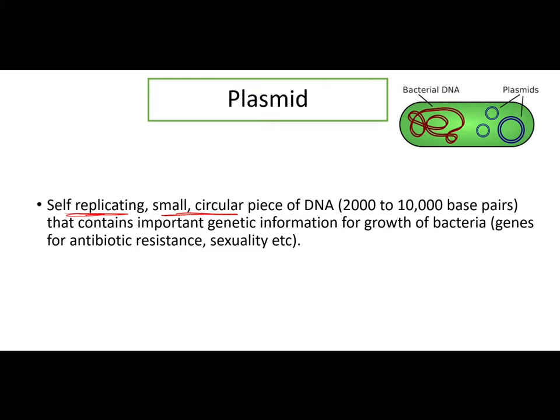This DNA is not present in all bacteria, which means bacteria can survive without this plasmid. The genes required for normal growth of bacteria and for coding particular proteins are present in the bacterial DNA. In the plasmid, there are some extra genes — extra genes that provide additional functions beyond normal survival.